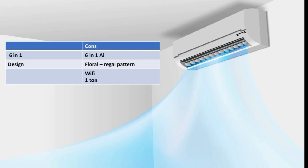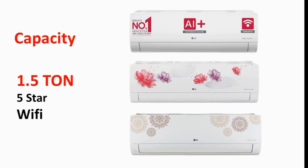This same model was available in 2022 as a 6-in-1 convertible. In 2023, it has been upgraded to 7-in-1. There are 3 design options: floral, regal pattern, and plain design. Wi-Fi is available as a feature. Variants include 1.5-ton 5-star AC and 1.5-ton 3-star units.